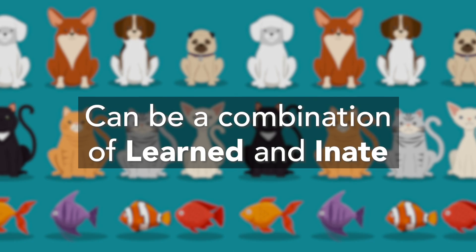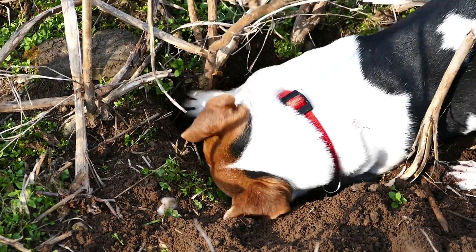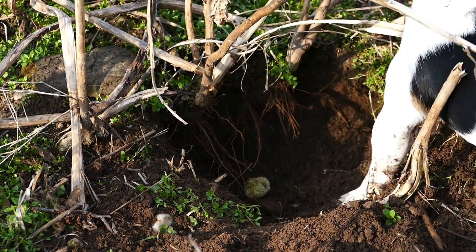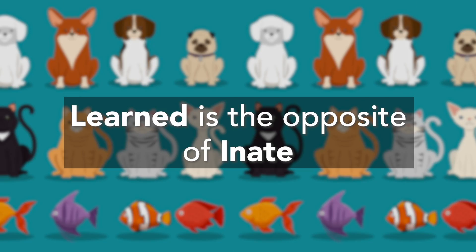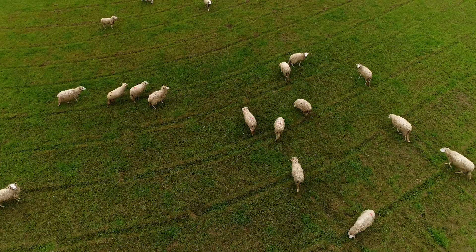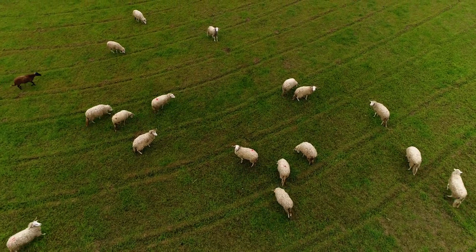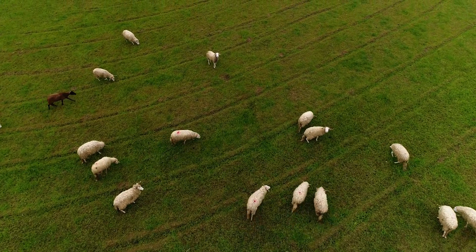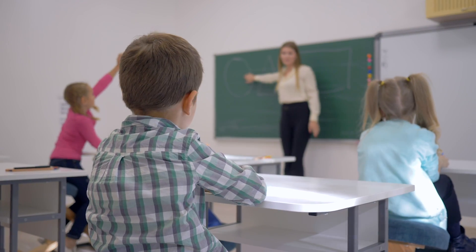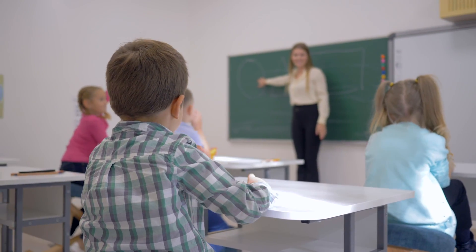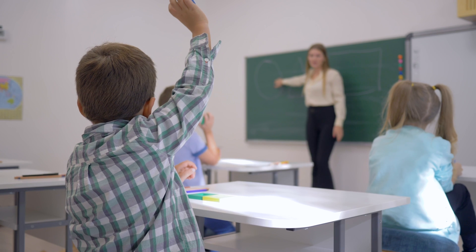A behavior can be a combination of both a learned and an innate behavior. A dog knows how to dig a hole, but it may have to be taught where it is okay to dig holes. Learned behavior is the opposite of innate behavior — it is either taught to an animal or developed from an animal's interaction with its environment.